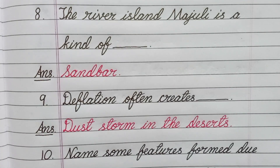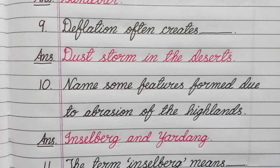Question number nine: Deflation often creates what? Answer: Dust storm in the deserts. Question number ten: Name some features formed due to abrasion of the highlands. Answer: Inselberg and Yardang.